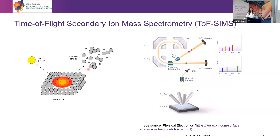These are called the secondary particles that are emitted. The secondary particles are then accelerated to possess the same kinetic energy before entering a flight tube, and they fly through this tube with a velocity proportional to their mass. The heavier particles will take longer to arrive at the detector, so by detecting the different times of arrival, we record a mass spectrum of the particles.